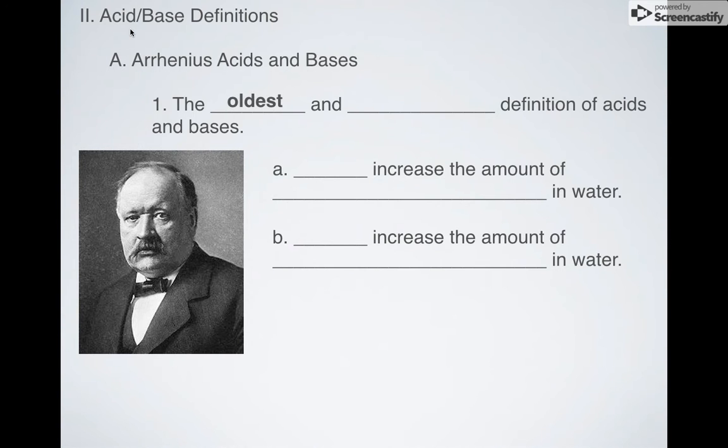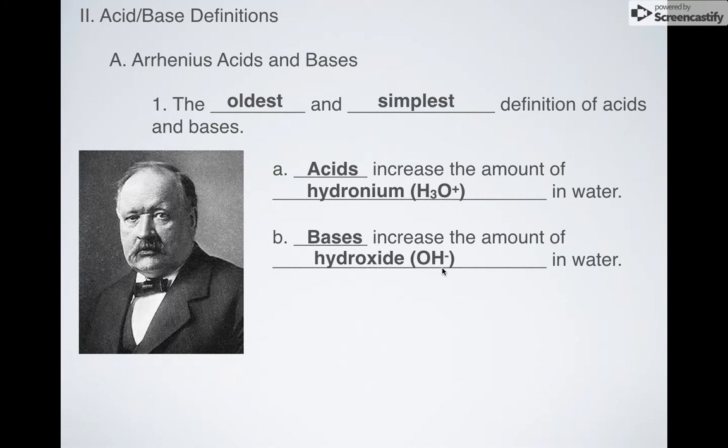So the first one is called the Arrhenius definition. It is the oldest and probably simplest definition of acids and bases that you can come up with. This guy came up with it and it was pretty much the first formalized scientific idea of what acids and bases work. Before then people just looked at their properties. So acids increase the amount of hydronium ion, H3O+. Bases increase the amount of hydroxide ion, OH-.